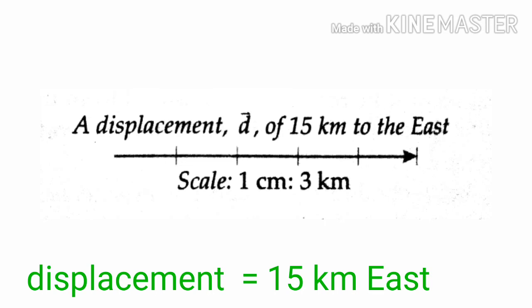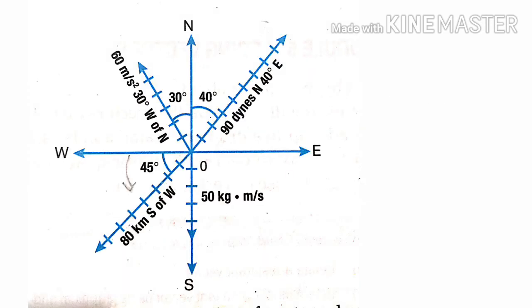Our sample vector is now complete. Here are some examples of vectors drawn in the Cartesian coordinate plane: a force of 90 dynes north 40 degrees east, an acceleration of 60 meters per second squared 30 degrees west of north.